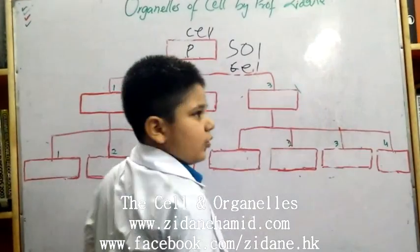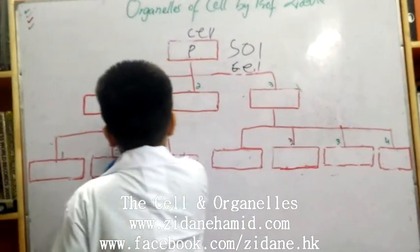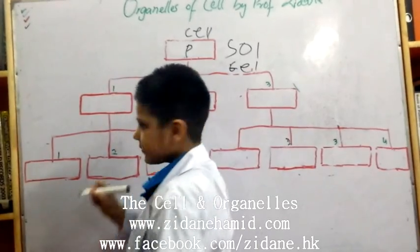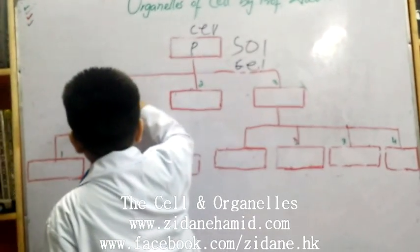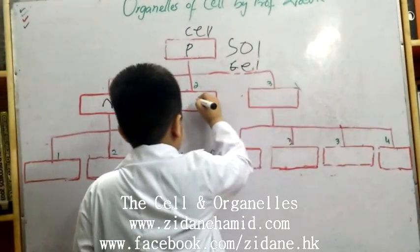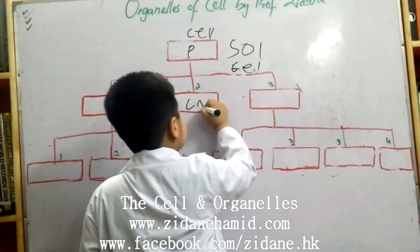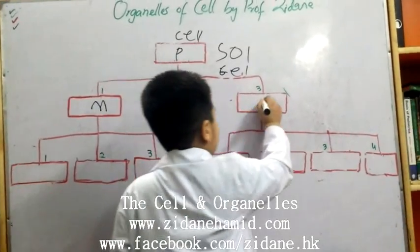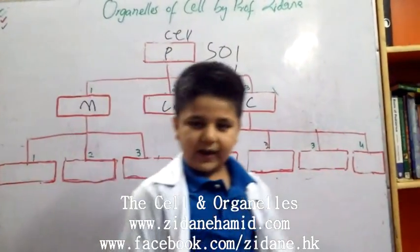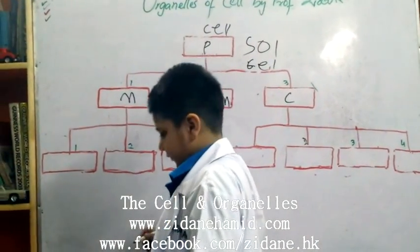I'm going to show you three parts of this cell. First, we're going to show you the nucleus, the cell membrane, and the cytoplasm. Let's see the nucleus first.